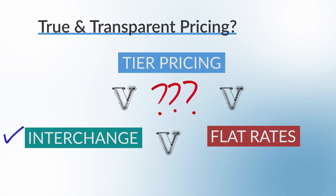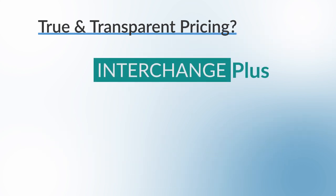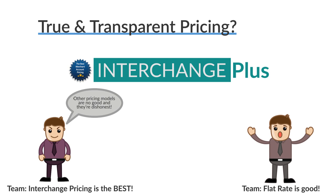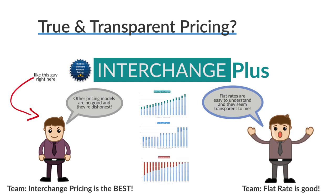A quick note on the label often applied to interchange plus as the only 'true and transparent' pricing model. The argument is that other pricing models — flat rate or tier-based — somehow hide costs because interchange rates don't appear on monthly statements. Some have even said tier-based and flat rate pricing is dishonest. I personally don't believe that to be true, because the right program is situational.